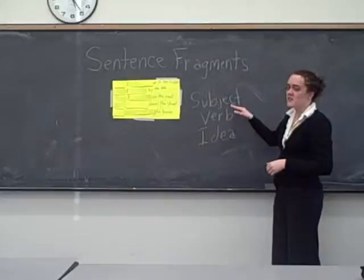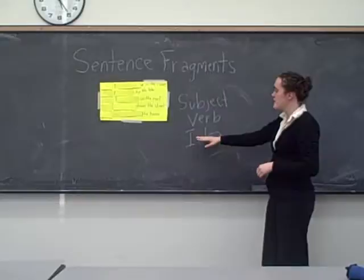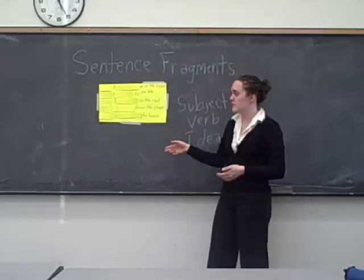...and it needs to make an idea. A verb is the thing that's happening in a sentence. The subject is the someone or something that's making what happens, happen. And it needs to have a complete idea. So what we have right now are sentence fragments, because they're not complete sentences.